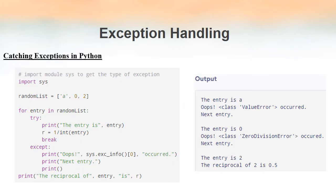We will see an example of how try and except clauses are used for handling exceptions. In this example we have imported the sys module, which is used to get the type of exception that was raised. We have created a list with three elements: a character 'a', and two integers, zero and two. We then start a for loop where the variable 'entry' loops through the list elements, taking values 'a', then zero, then two.